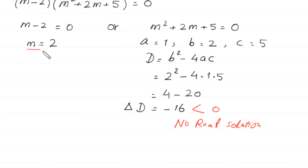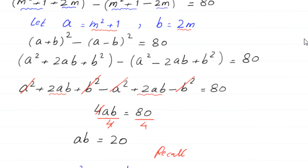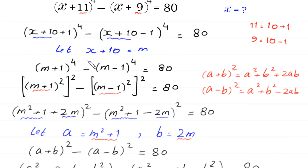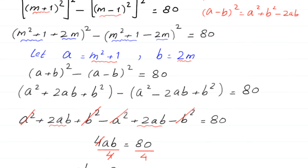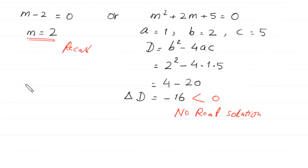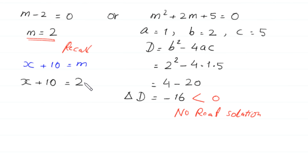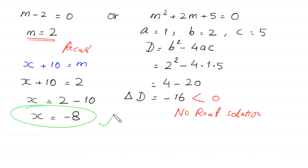So we accept only the value m equals 2. Recalling that we supposed x plus 10 equals m, we substitute m equals 2: x plus 10 equals 2. Moving plus 10 to the right side, x equals 2 minus 10, which gives x equals negative 8. So x equals negative 8 is the final answer.